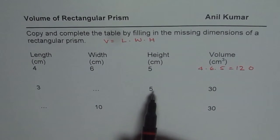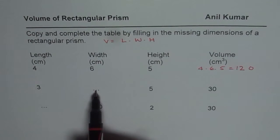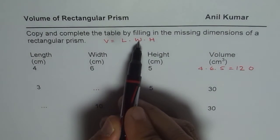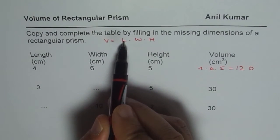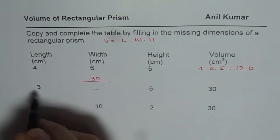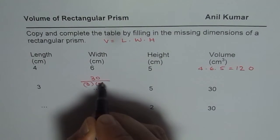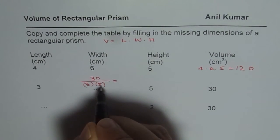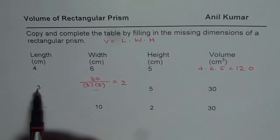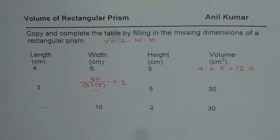In this particular case, we are given length, height and volume but not the width. So what should be the width? If you rearrange the formula, width equals volume divided by length times height. That means 30 divided by 3 times 5. 3 times 5 is 15, so this equals 2. You can check: 3 times 2 is 6, and 6 times 5 is 30. So that works.